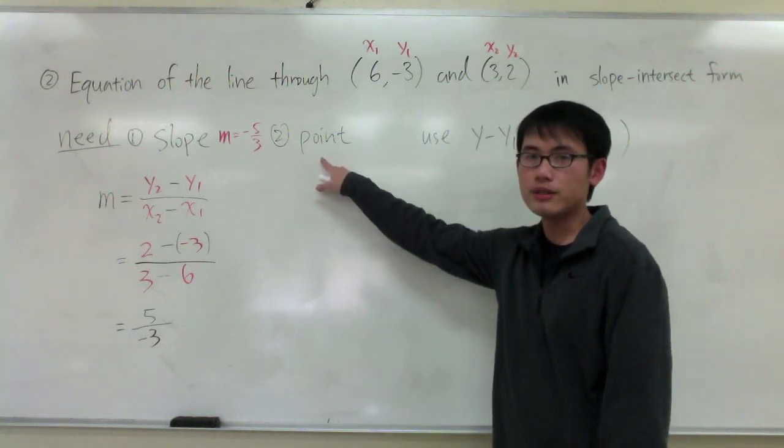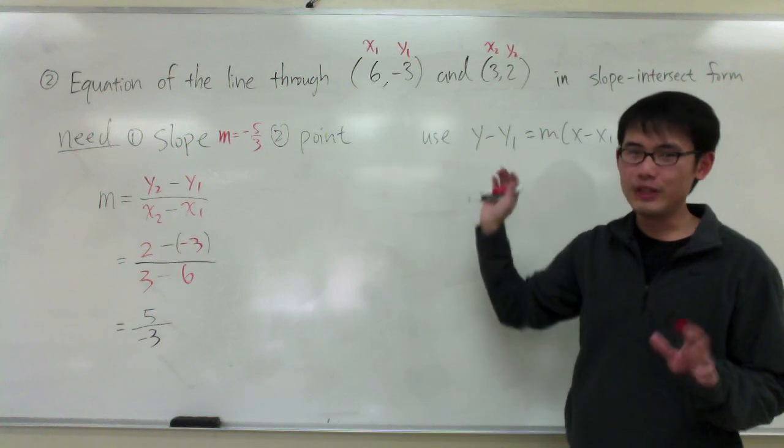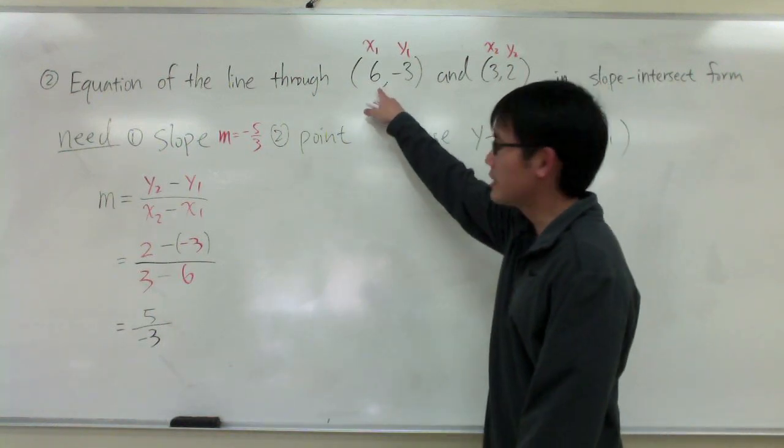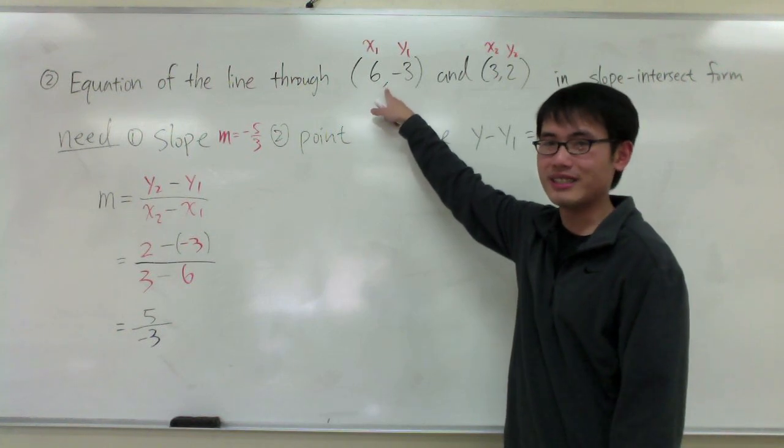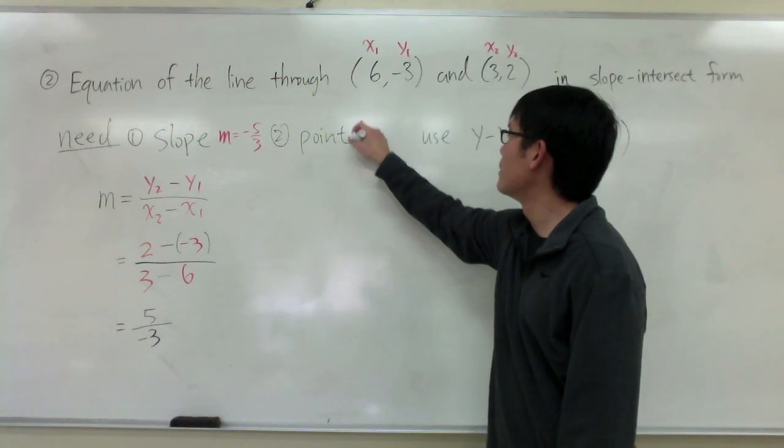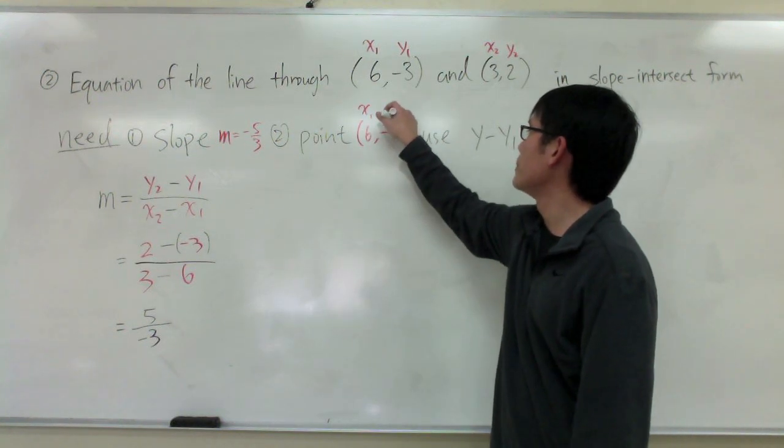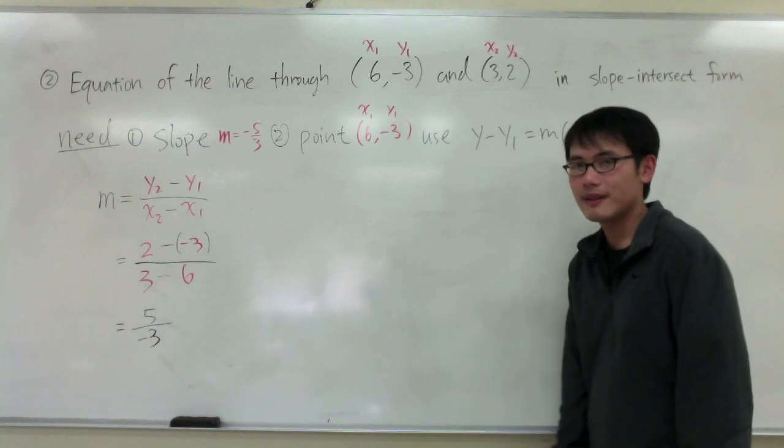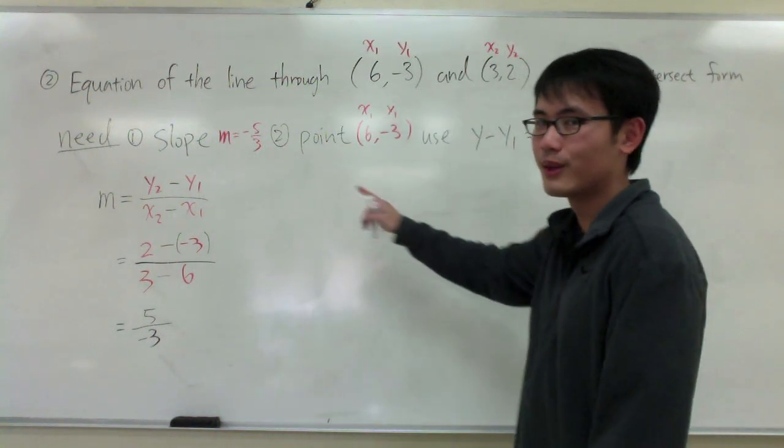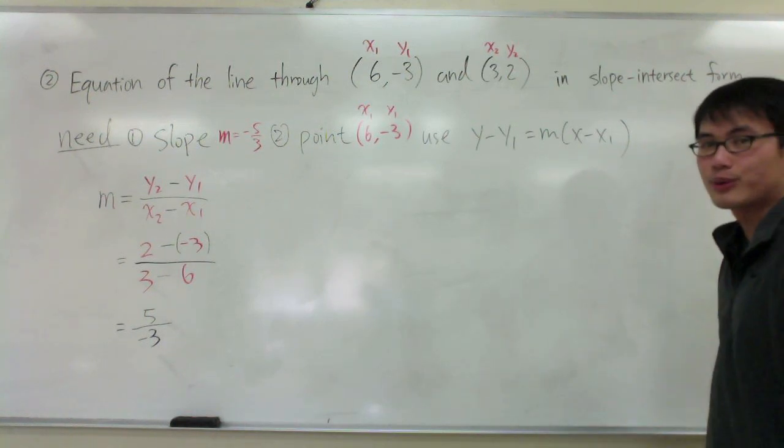Then the second thing I need is the point. And we have 2 points. It doesn't matter which point that you use. It will be the same at the end. And I want to be consistent with my labeling. I'll just use the first one as my point. So I will pick 6, negative 3. That will be my x1, and that will be my y1. And you see that we have the slope and the point. We can then use this equation, this formula, to help us finish this equation.